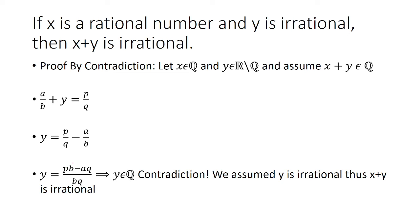Since a, b, p, and q are all integers, when I multiply integers and subtract them I still get an integer. So the numerator is an integer, and b and q are also integers — and remember, we said they're not equal to 0. So y is a non-negative rational number.